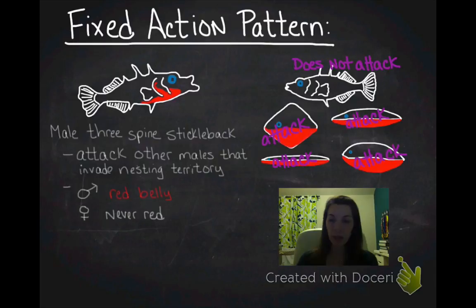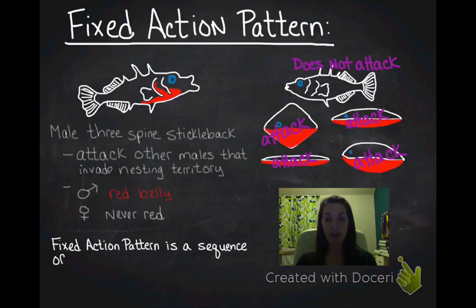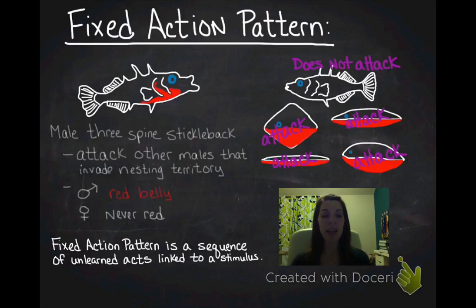So, what they decided, what they classified this as, this is a fixed action pattern. So, in a fixed action pattern, there's a sequence of unlearned acts that are linked to a stimulus. In this case, the stimulus is the red. And the sequence of unlearned acts is the attack behavior. Sequence of unlearned acts means that this is a completely innate behavior. This is not learned at all.